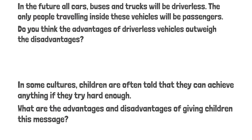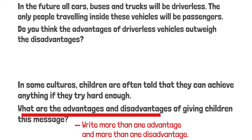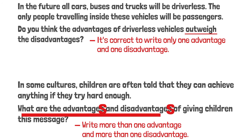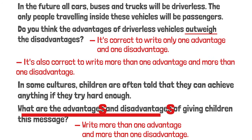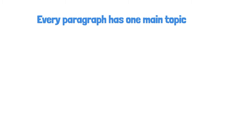There is another type of question that asks what are the advantages and disadvantages. For this type of question, you definitely need to write more than one advantage and more than one disadvantage, since the question uses the plural. But for the 'outweigh' type, it's 100% correct to give only one advantage and only one disadvantage, because they are not asking you to count — they are asking which side is more significant. Of course, you can write more than one, but I highly recommend writing only one, because each body paragraph will have only one main idea and you can fully develop your ideas without writing too many words.